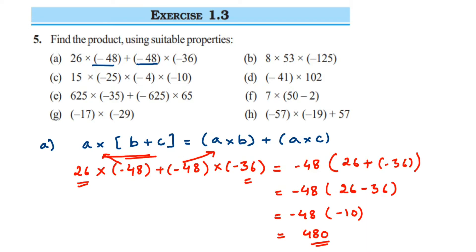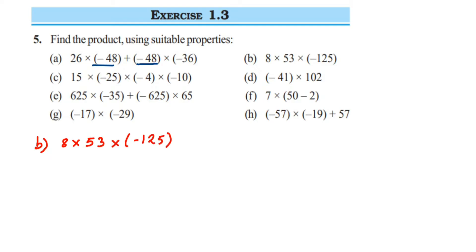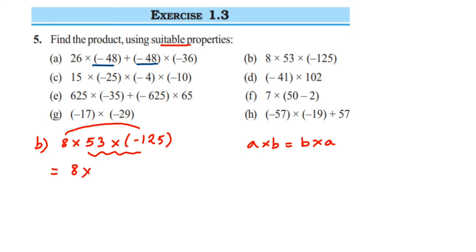Now the second question: 8 into 53 multiplied by minus 125. We have only three numbers so we cannot directly use distributive property. We are going to use commutative property — multiply in a way that makes calculation easier. Instead of multiplying 53 and minus 125, we will multiply 8 and minus 125. Commutative property says a into b is the same as b into a.